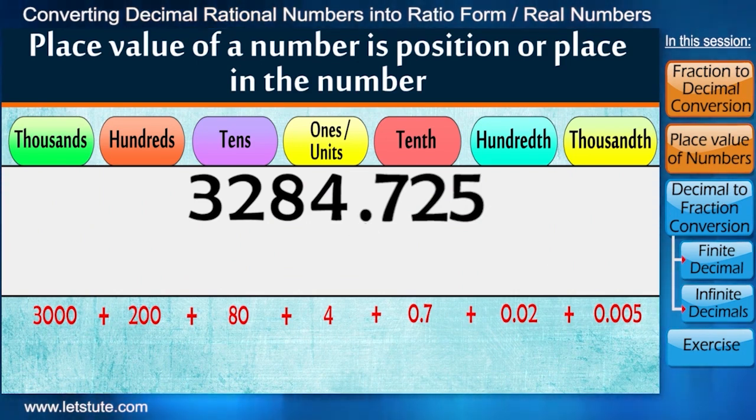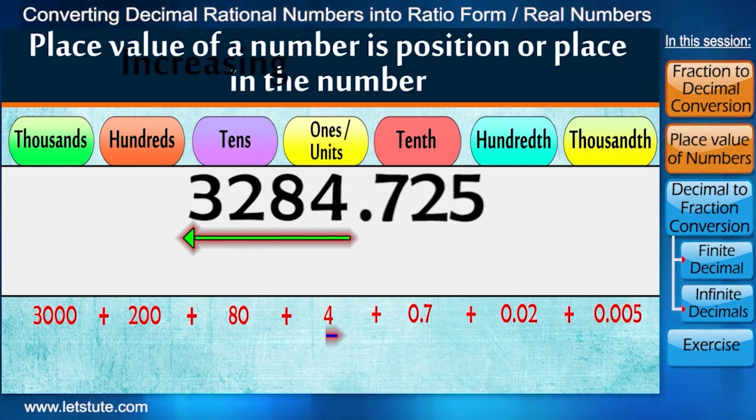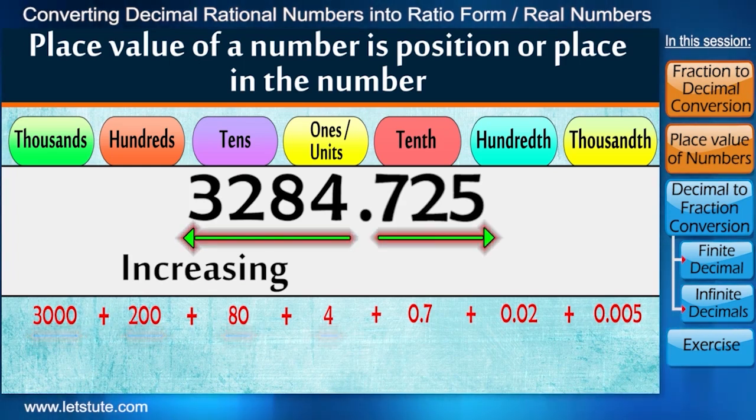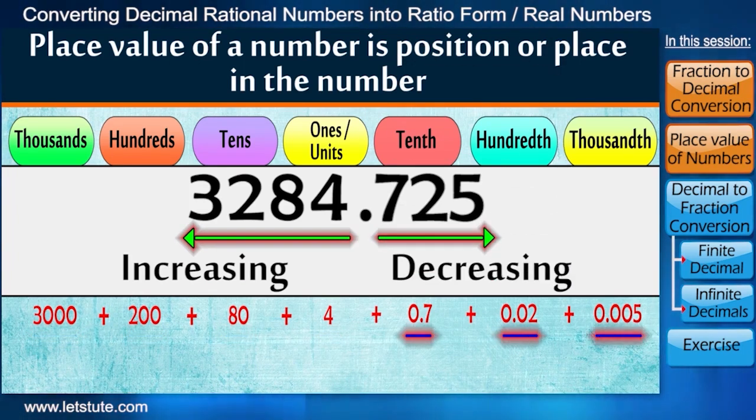And here the decimal point plays a central role. Why I am saying this? Because if we notice, before decimal, the place value of number gets bigger and bigger as we go to the left, while after decimal, the numbers get smaller and smaller as we go to the right.